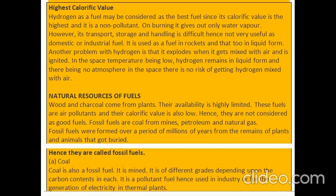Natural resources of fuels: wood and charcoal come from plants. Their availability is highly limited. These fuels are air pollutants and their calorific value is also low, hence they are not considered good fuels. Fossil fuels are coal from mines, petroleum and natural gas. Fossil fuels were formed over a period of millions of years from the remains of plants and animals that got buried, hence they are called fossil fuels.